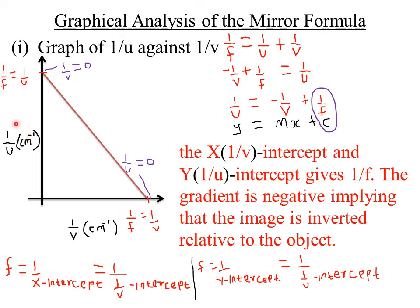So 1/u represents the y-intercept and 1/v represents the x-intercept, the horizontal axis intercept. We can conclude that both the x-intercept (1/v-intercept) and the y-intercept (1/u-intercept) give the reciprocal of the focal length, that is 1/f.